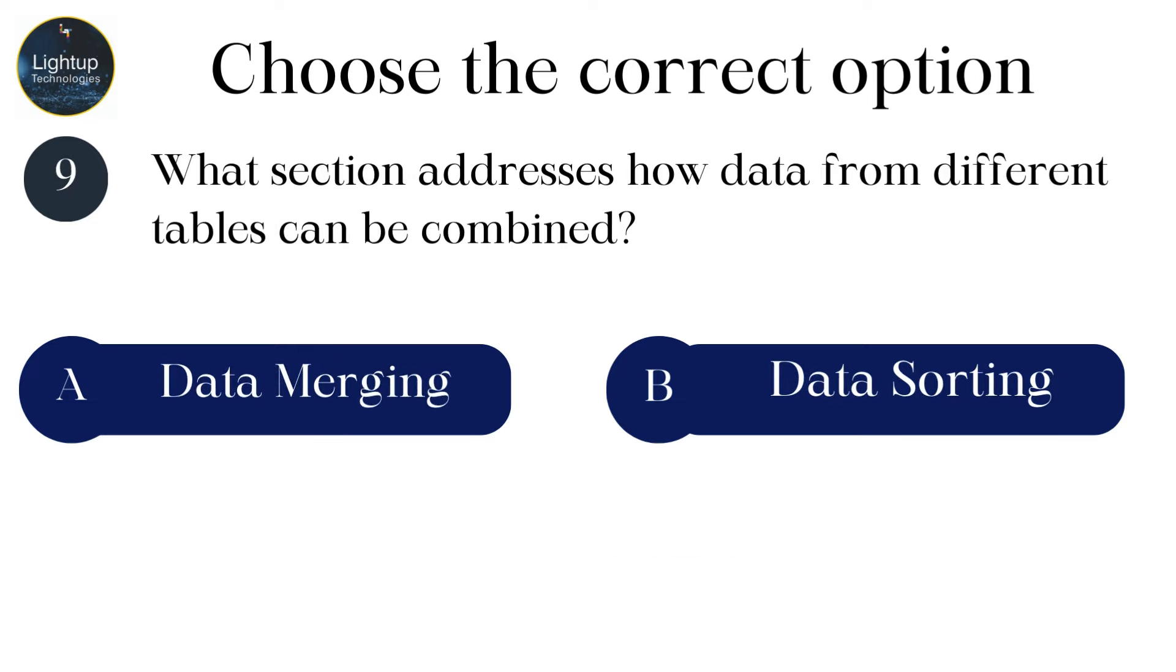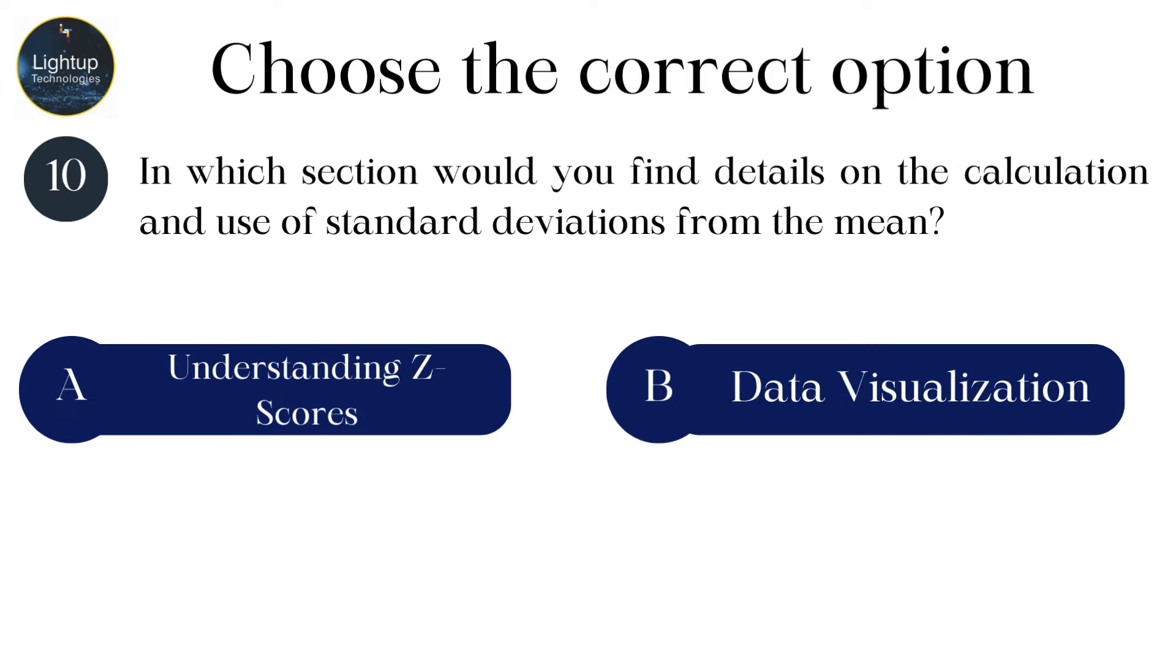What section addresses how data from different tables can be combined? In which section would you find details on the calculation and use of standard deviations from the mean?